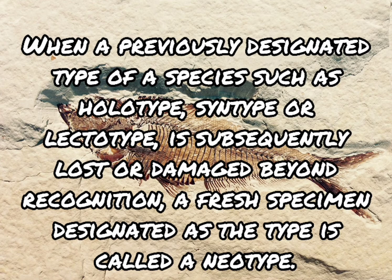When a previously designated type of a species, such as holotype, syntype, or lectotype, is subsequently lost or damaged beyond recognition, a fresh specimen designated as the type is called a neotype.